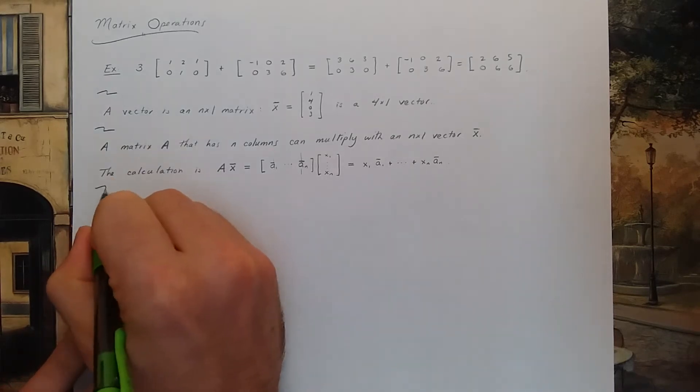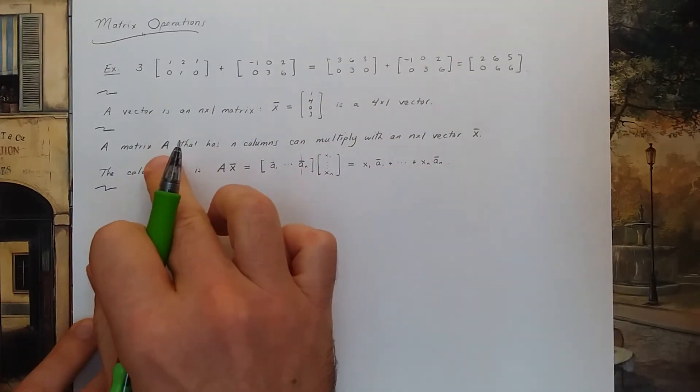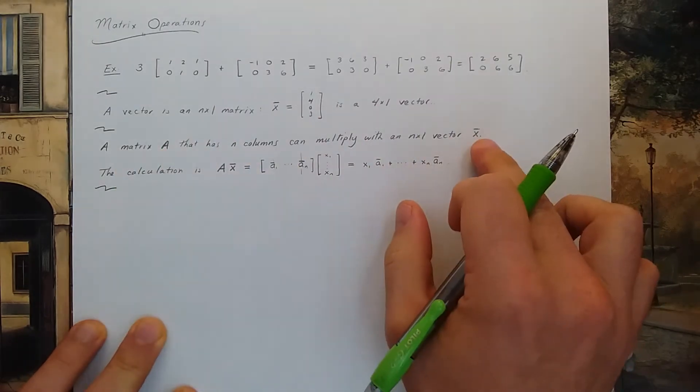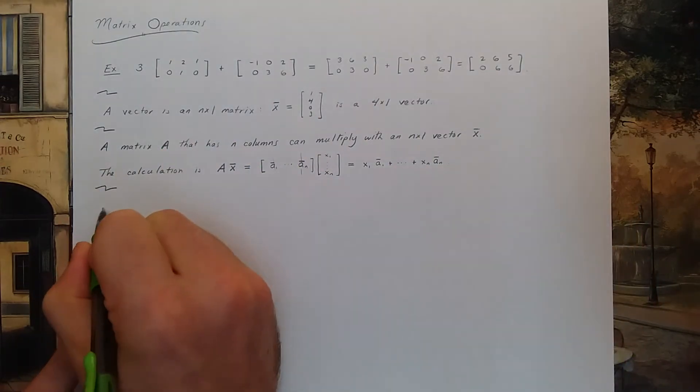Okay, let's finish this video by doing a number of examples of multiplying a matrix times a vector. So here's our first example.